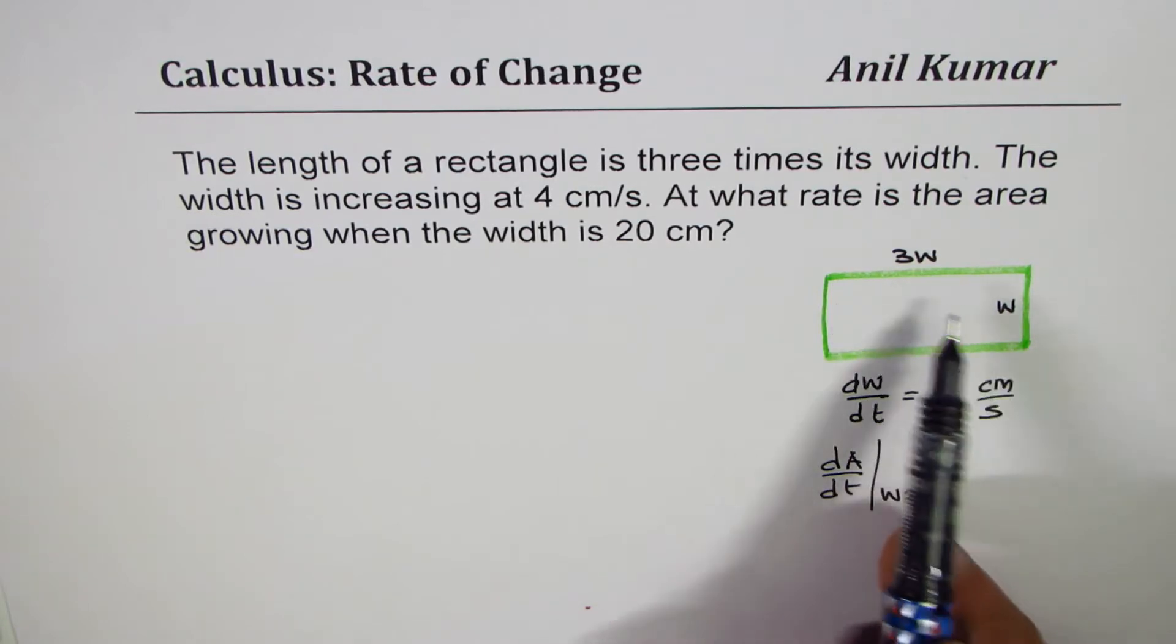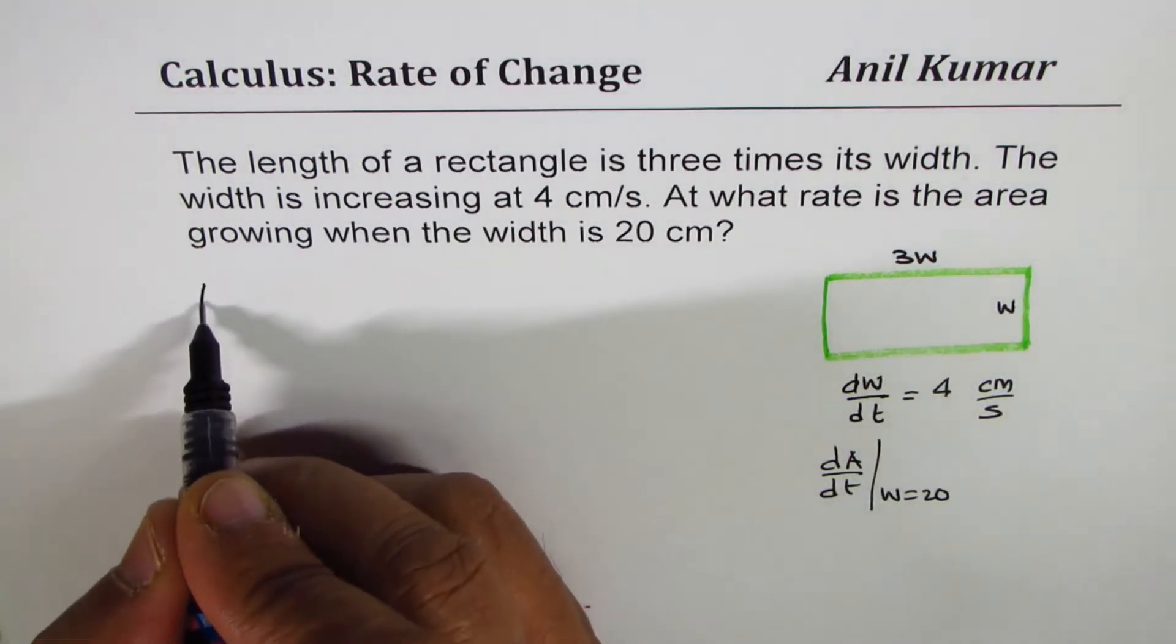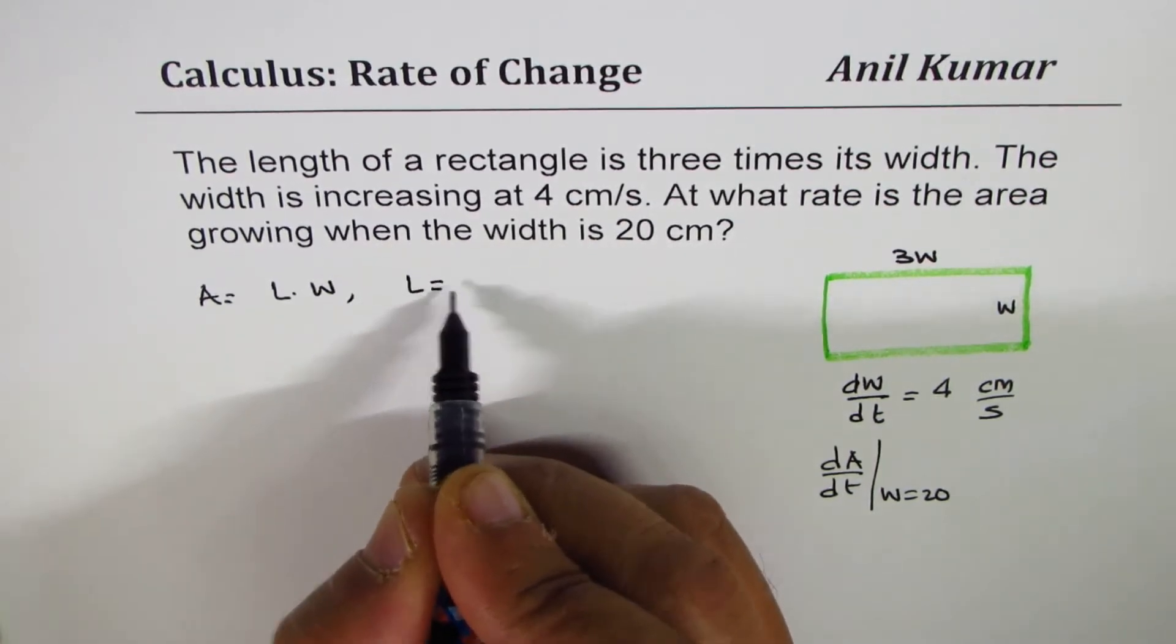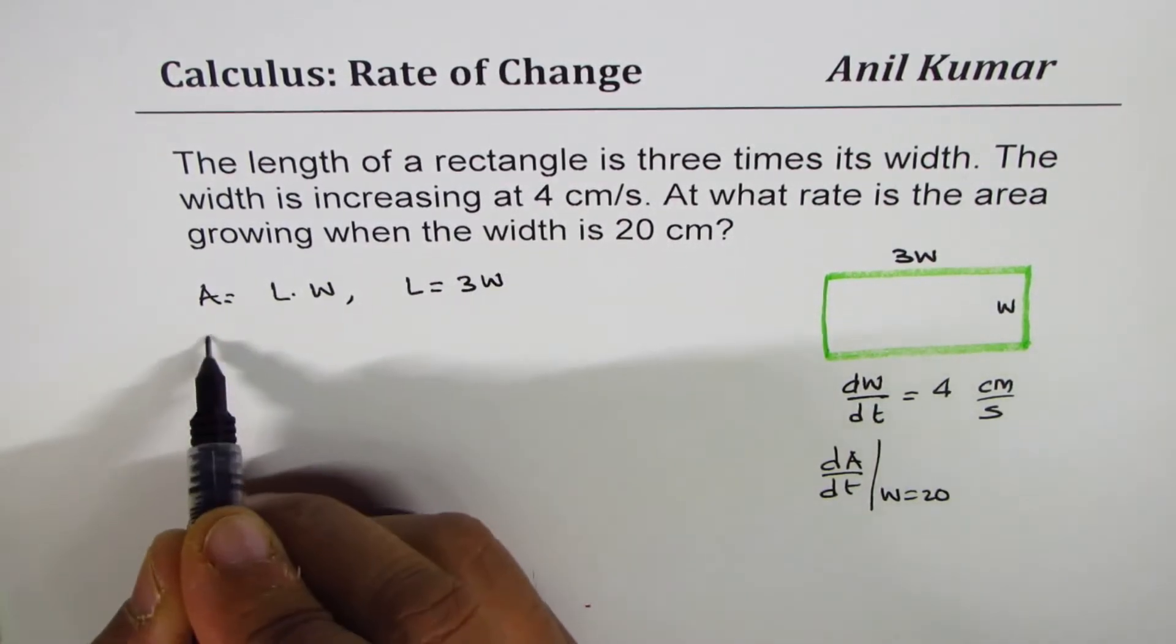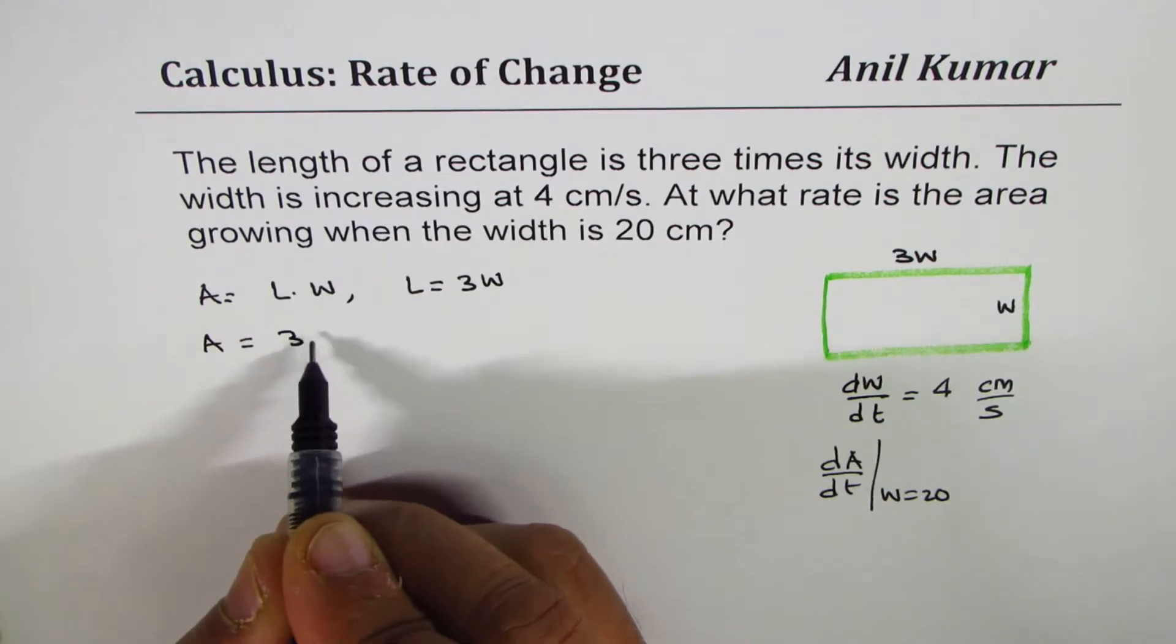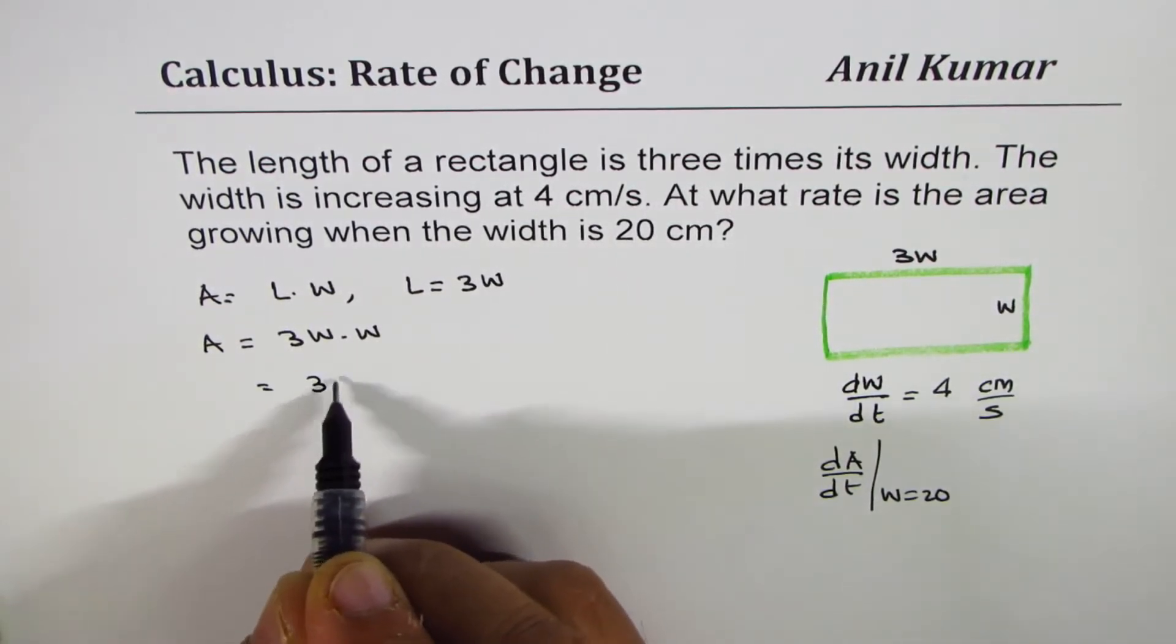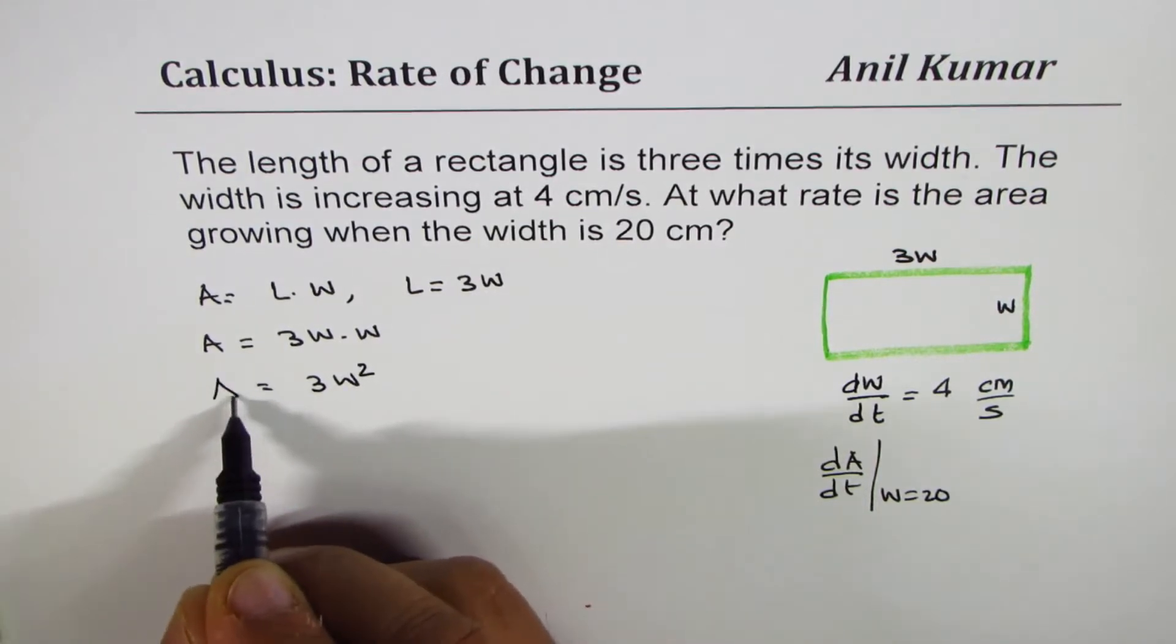We can write area equals length times width. Since length is three times width, we can write A equals 3W times W, which is 3W squared. So we get area as a function of width.